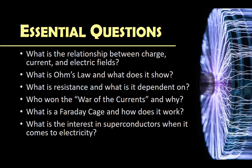Number three: what is resistance and what does it depend on? This is the idea of resistance — the impedance of the flow of current. Number four: who won the so-called war of currents and why? Number five: what is a Faraday cage and how does it work? And lastly, what is the interest in superconductors when it comes to electricity?